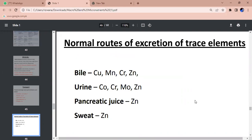Normal routes of excretion of trace elements. We have normal routes of excretion. Bile - copper, manganese, chromium, zinc. Urine - cobalt, chromium, zinc. Sweat - we have zinc in sweat. And zinc is excreted out.